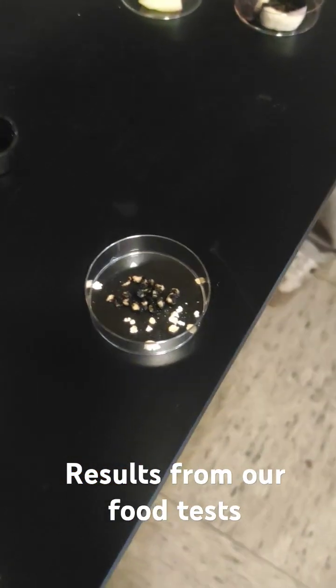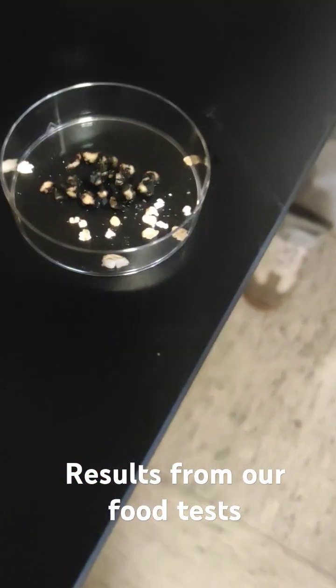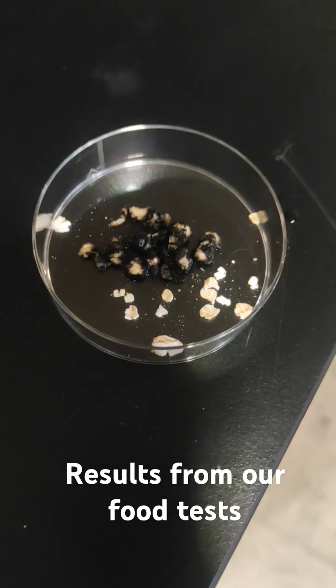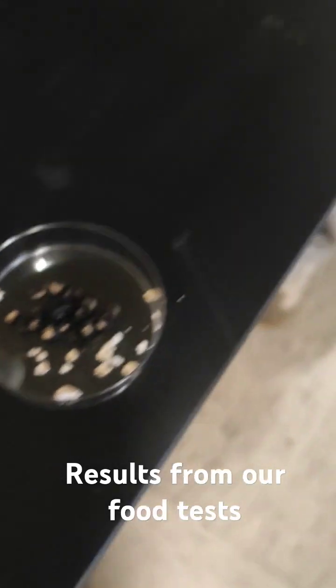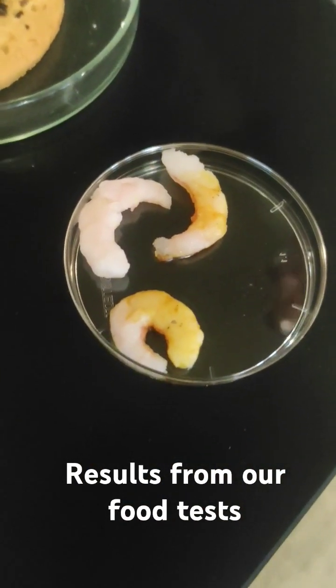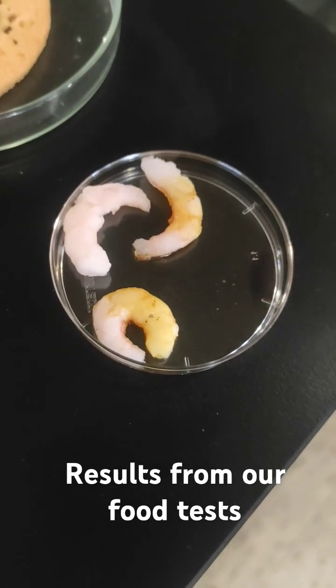First we have our test for starch, the iodine test. If it turns black like we see in the oatmeal, there's plenty of starch. If we're here at the shrimp, it's brown, we have less starch.